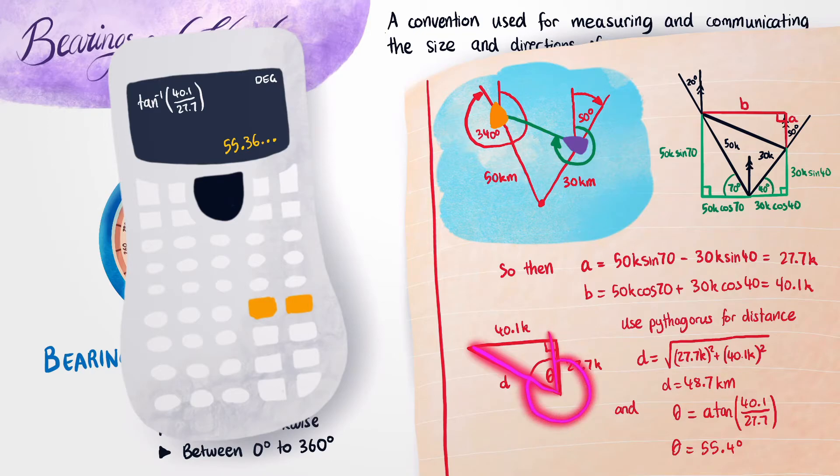So what you'd need to do is you'd need to take 360 and subtract 55.4. And this immediately tells us that the true bearing between our boats is 304.6 degrees. So now we've actually completed our example for bearings, so it's time to look at another kind of angle measurement.